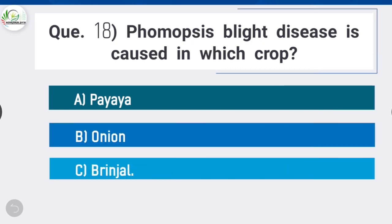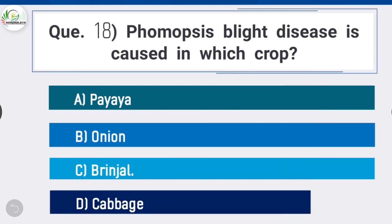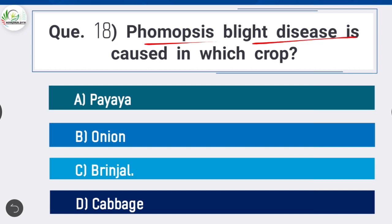Question 18: Phomopsis blight disease is caused in which crop? Option C is correct: brinjal. Phomopsis blight is caused by the fungus Phomopsis vexans and is a major disease of brinjal. Other solanaceous crops like chili and tomato are not affected by this blight.